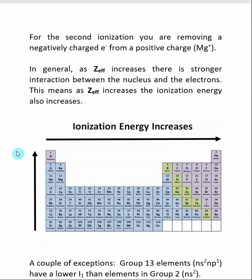The general trend for ionization energy says that they increase as we go up and to the right. This follows the trend for Z-effective, which makes sense because as Z-effective increases, there's a stronger interaction between the nucleus and the electrons.